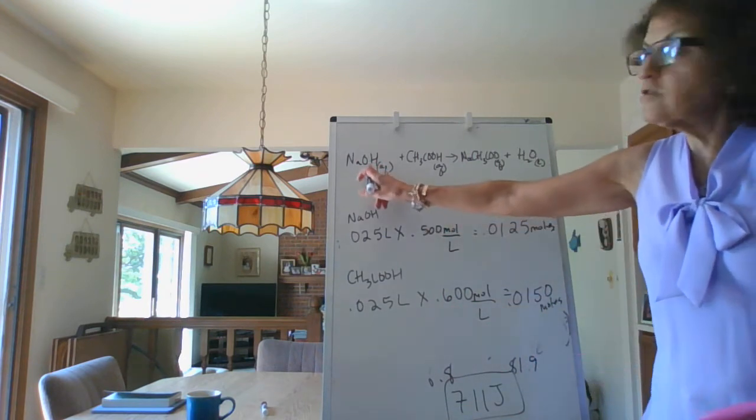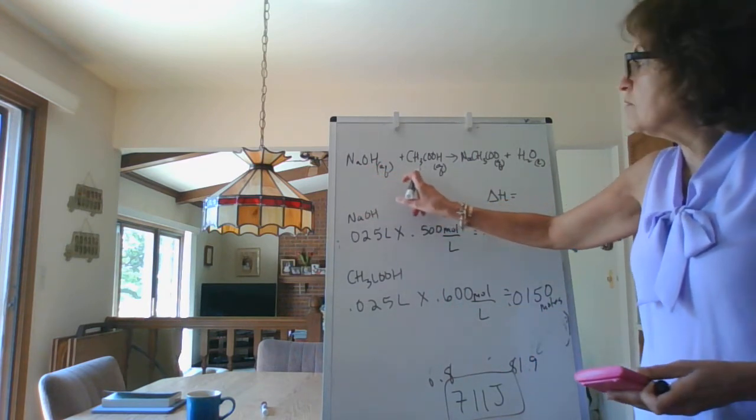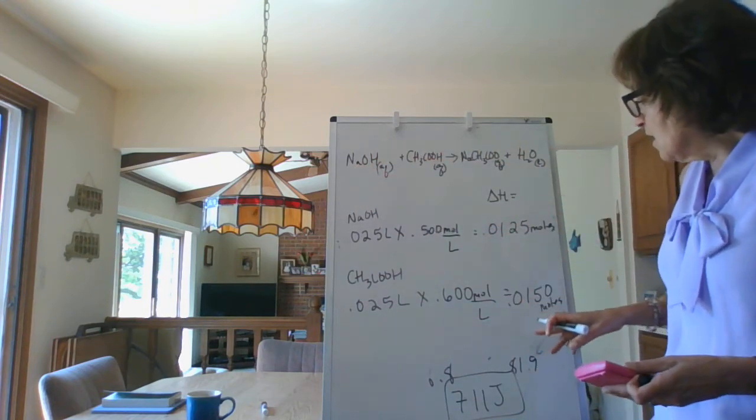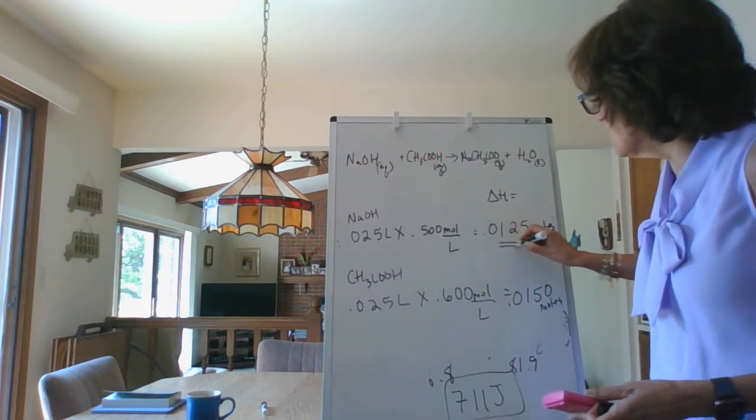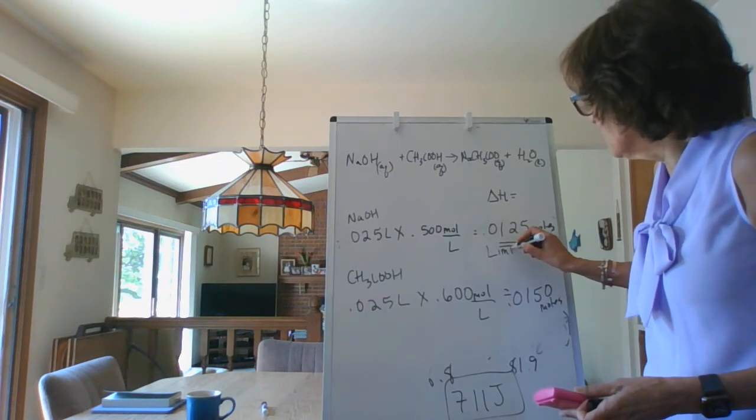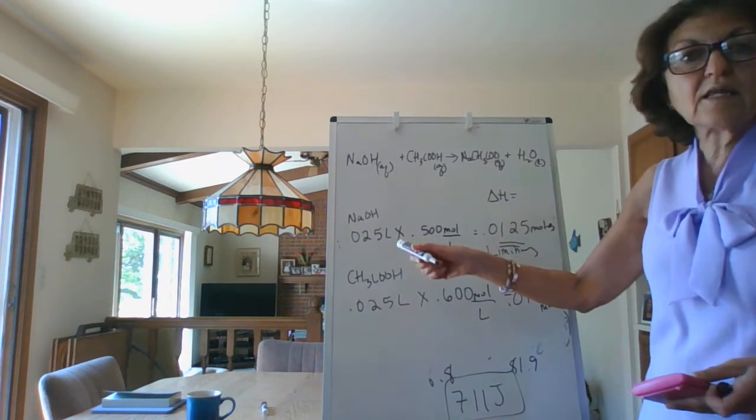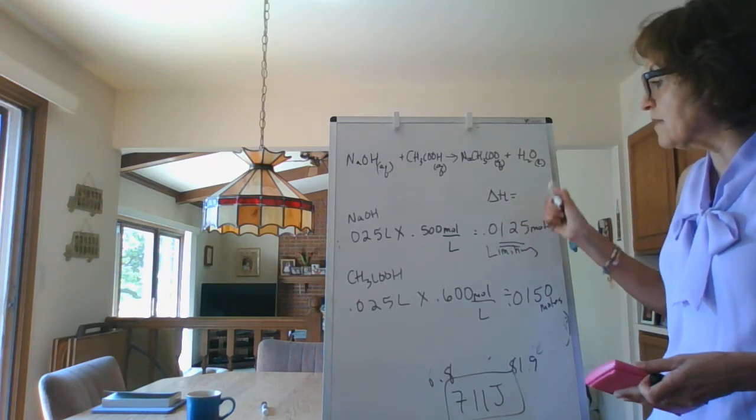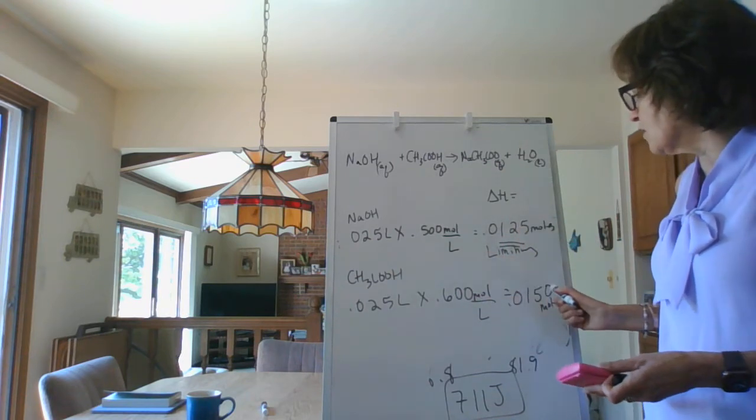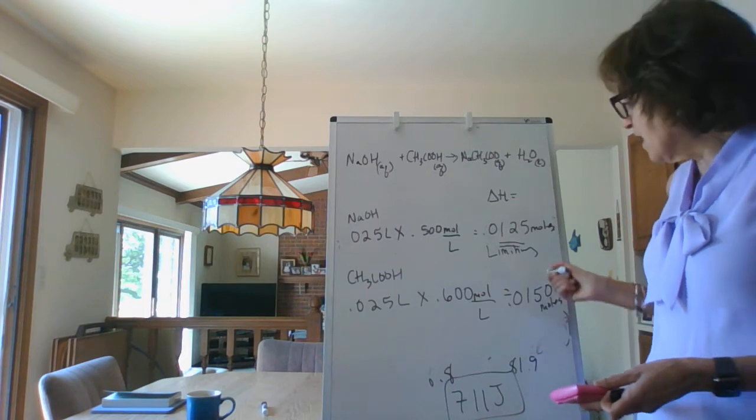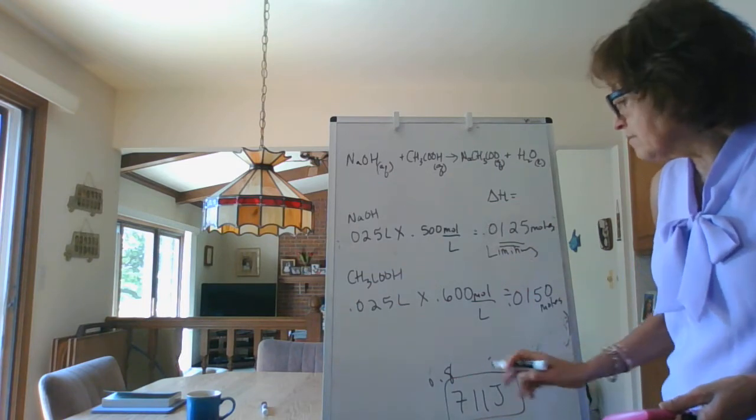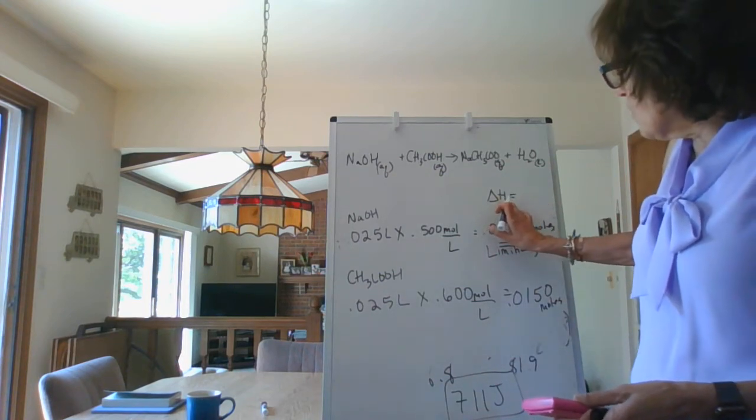They're supposed to react in a one-to-one ratio, one mole of this will react - this is a balanced equation - so obviously this is limiting. So what this is telling us is that 0.0125 moles of sodium hydroxide will react with 0.0125 moles of acetic acid, and you're just going to have some acetic acid left over.